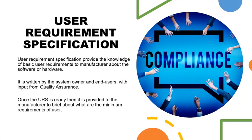Now we will discuss what is user requirement specification. User requirement specification provides the knowledge of basic user requirements to the manufacturer about the software and hardware. For example, from a quality laboratory, if you are planning to procure an HPLC instrument with software, you need to elaborate the basic requirement of how the instrument performs the chromatographic analysis and how the software acquires the data for processing and reporting.